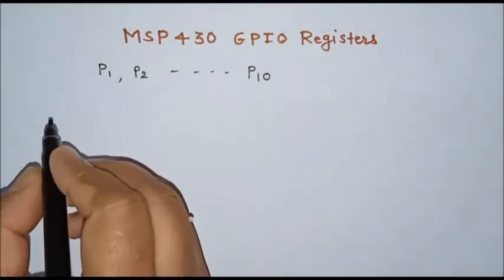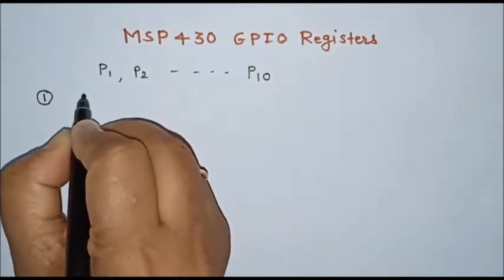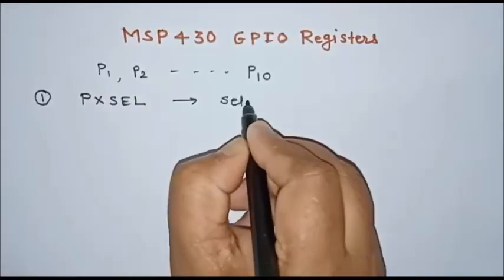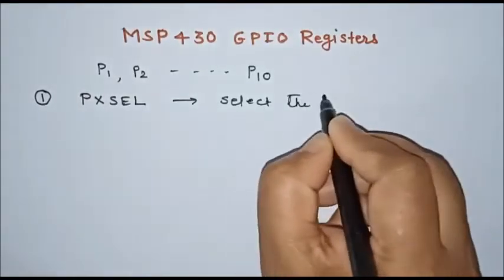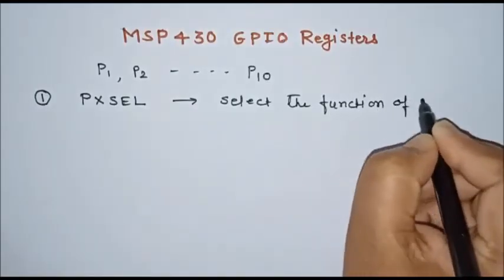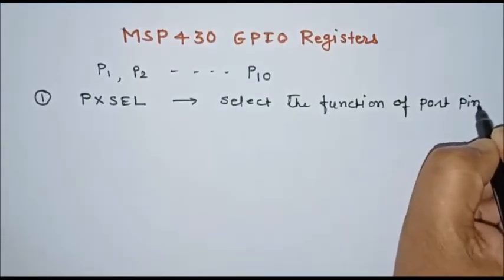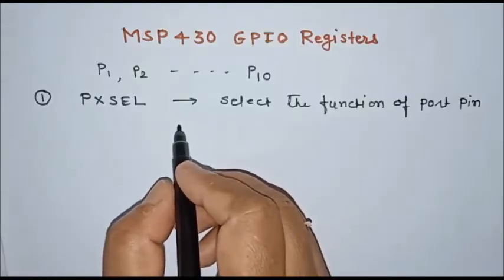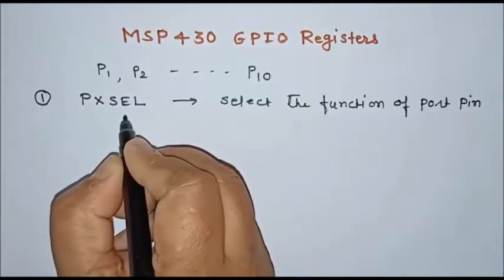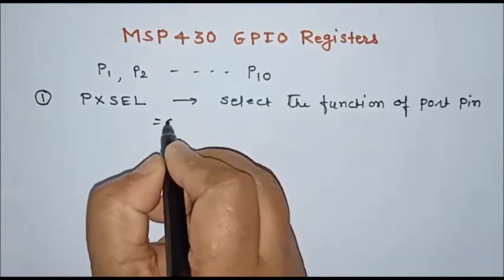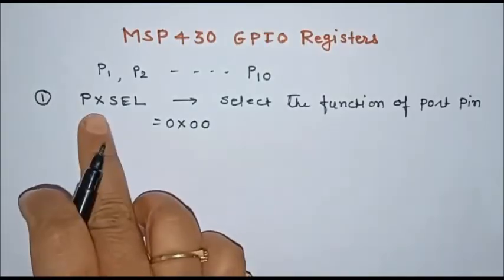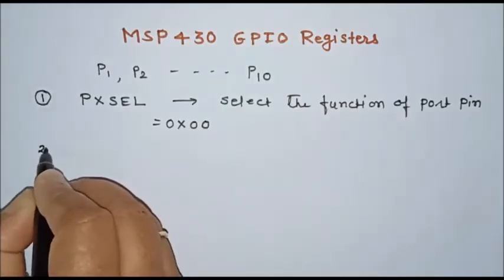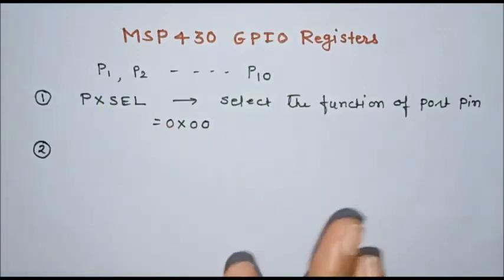The first register related to a port is the port select register, the PxSEL register. The PxSEL register selects the function of a port pin. To use a port pin as a general purpose GPIO, the PxSEL bit for that particular pin must be 0. By default, 0x00 is stored in the select register, so no need to initialize it if you want to use the port pin as a general purpose GPIO. For special functions, you must initialize this register.